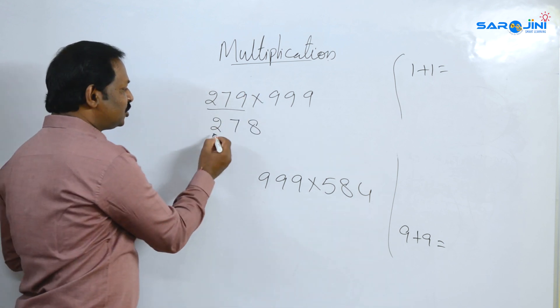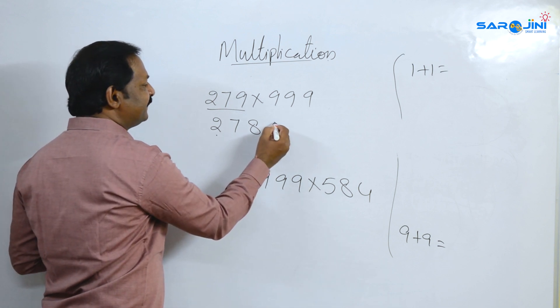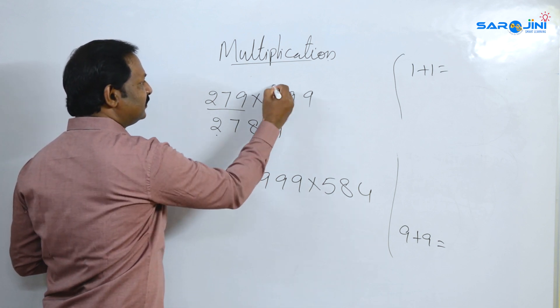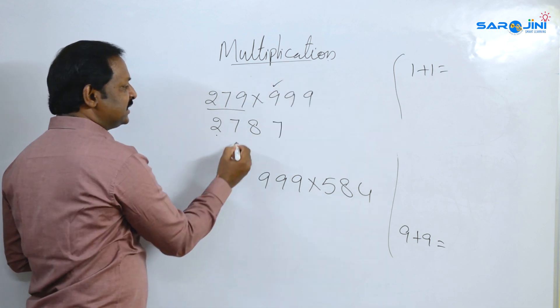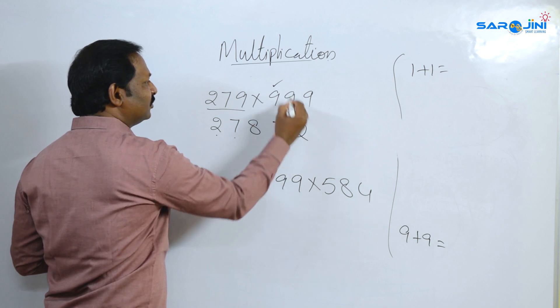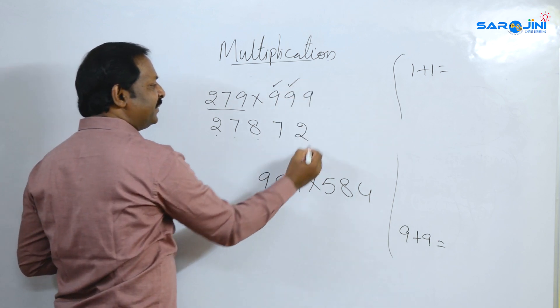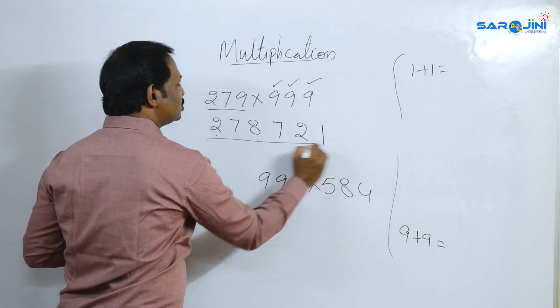For 279: 2 and its combination is 7 — 9. 7 and its combination is 2 — 9. 8 and its combination is 1 — 9. So the pairs are: 2→7, 7→2, 8→1, each followed by 9.